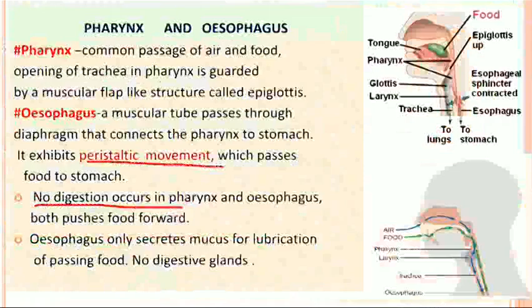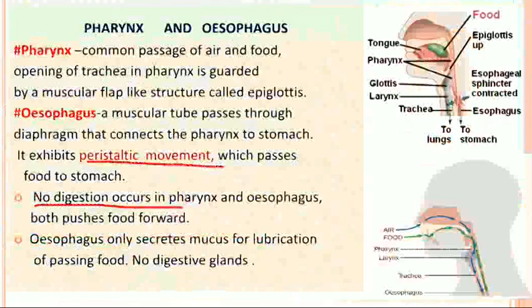Next is the pharynx and esophagus. The pharynx is the common passage for both air and food. The opening of the trachea in the pharynx is guarded by a muscular flap-like structure called the epiglottis, which is present above the glottis — the opening of the larynx which opens into the trachea. While swallowing food, the epiglottis closes the top of the glottis to prevent food from entering the trachea. The esophagus is a muscular tube which passes through the diaphragm, connecting the pharynx to the stomach. It exhibits peristaltic movement — a wave of alternate contraction and expansion called peristalsis — which passes food to the stomach, with the help of smooth muscles in the wall.